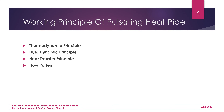The working principle of a pulsating heat pipe is based on thermodynamic principles, fluid dynamic principles, and heat transfer principles. We have a heat source and a heat sink — one at which heat is provided and the other where heat is rejected. Electronic equipment that generates heat is considered the heat source, and where the heat is rejected is the heat sink.